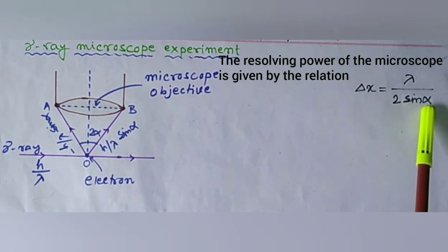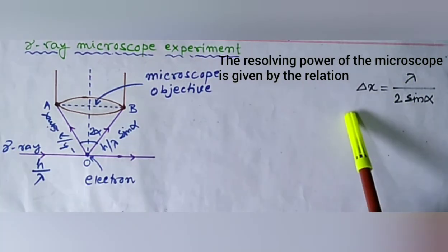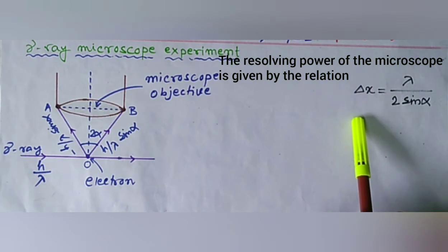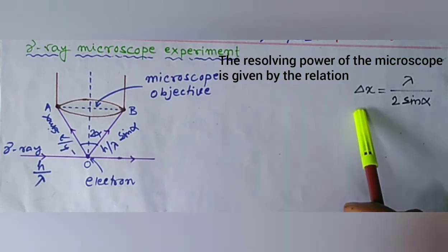Where lambda is the wavelength of the gamma ray, and delta x is the distance between two points which can be resolved by the microscope. So delta x must be the uncertainty in the position measurement of the electron.